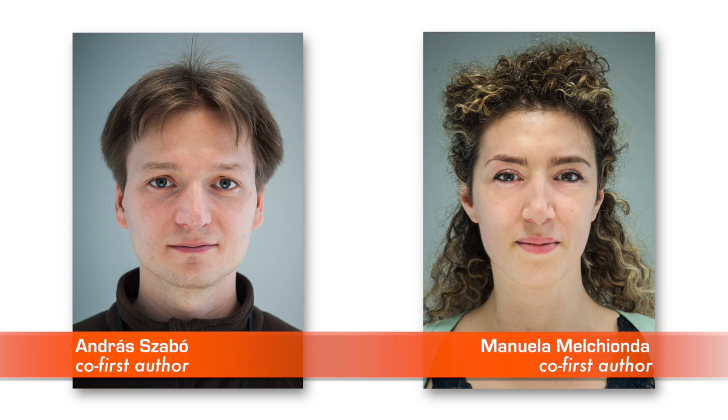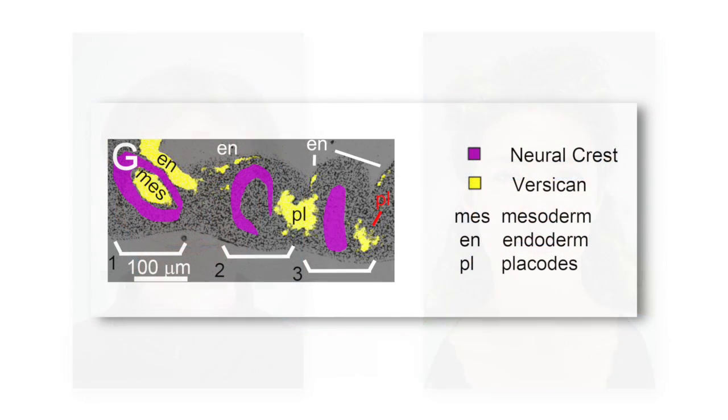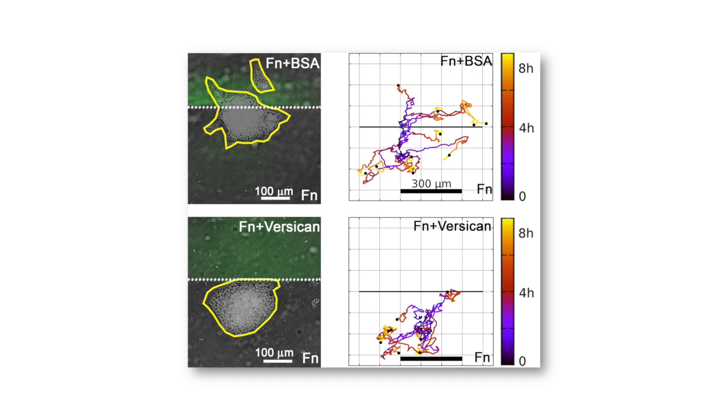Mayor and colleagues, led by postdocs Andreas Szabo and Manuela Melchionda, found that as previously seen in chicken and mouse embryos, Versican is expressed in the tissues surrounding the neural crest cells of Xenopus embryos. We cultured neural crest cells in vitro in a condition where they were cultured just on fibronectin, or in another condition where the neural crests were exposed to a region of the petri dish that was covered with fibronectin and Versican. And we found that while the neural crest cultured on fibronectin could move all over the dish, the cells cultured in the Versican substance stopped migrating when they reached that border of the Versican, confirming what was already published, that Versican was an inhibitor of neural crest migration.